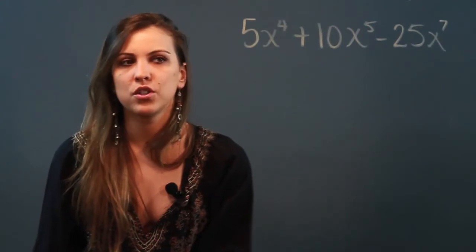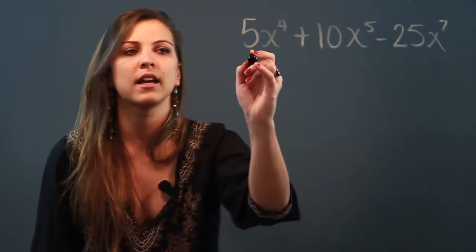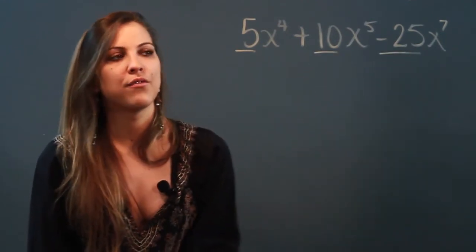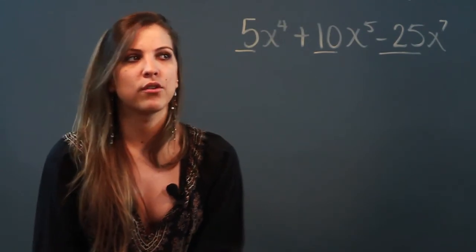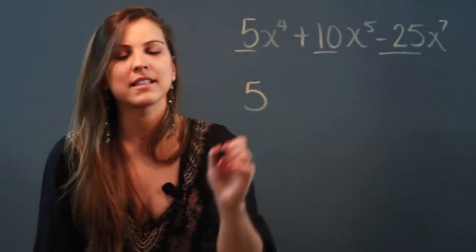The first thing I want to do is take the numerical GCF, so I'm going to forget about the variables for a second and look at my numbers: 5, 10, and 25. I'm looking for that GCF, so find the greatest common factor of 5, 10, and 25, and that number is of course 5.